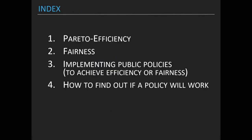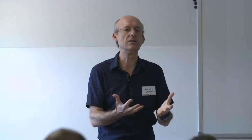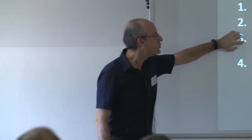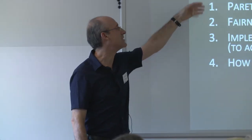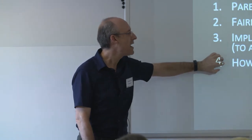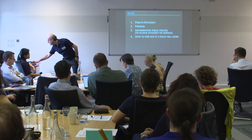So what is this chapter about? Well, it's about how we can classify allocations or outcomes in terms of efficiency and in terms of fairness. And because this is a book directed toward policy implementation, it's about how to implement policies to achieve these goals and how to find out whether these policies will work or not.